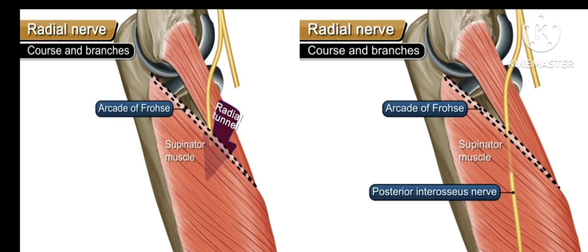The deep branch supplies the supinator muscle as it passes through it.